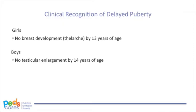Clinically, delayed puberty is classified in girls when there's no breast development or thelarche by 13 years of age. In boys, delayed puberty is classified when there's no testicular enlargement by 14 years of age — in other words, the testicle is less than 4 milliliters in volume or less than 2.5 centimeters in length. Both of these age cutoffs reflect more than two standard deviations above the population mean. The criteria for delayed puberty only concerns the gonadotropin-dependent process, or true puberty — breast development in a girl or testicular enlargement in a boy is the key to true puberty.